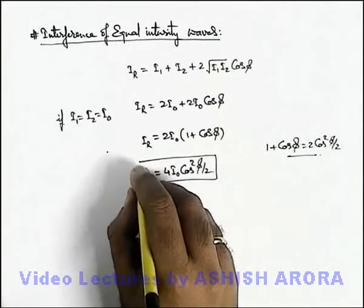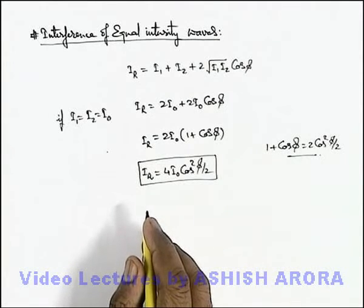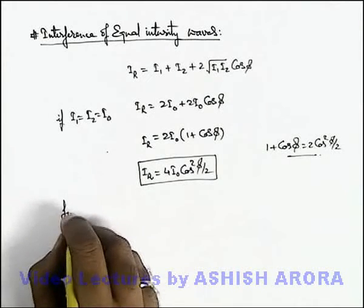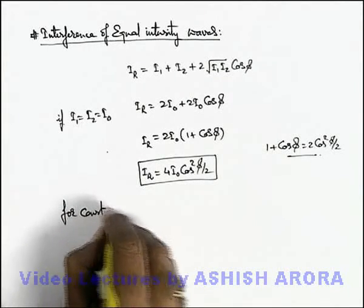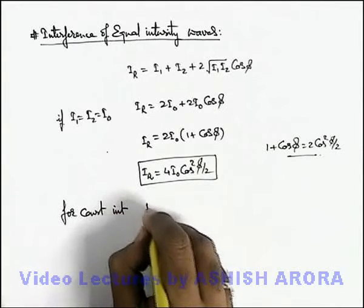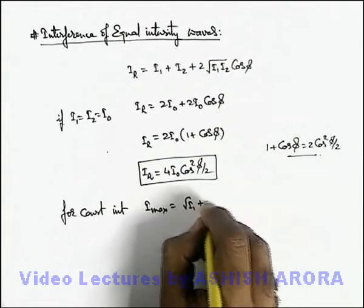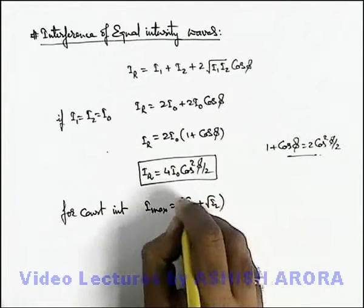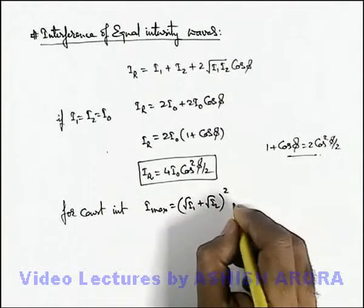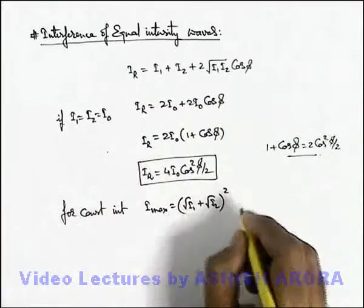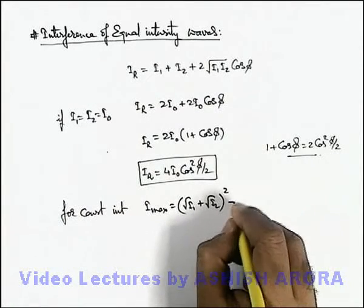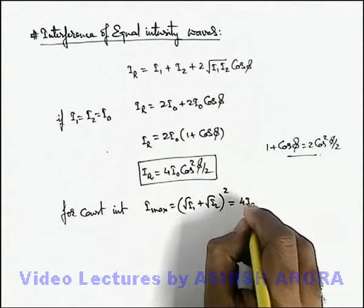Similar relation we have already studied in this section of waves. And here we can write for constructive interference, intensity is maximum which is (√I₁ + √I₂)². We have just studied in the previous section. If I₁ is equal to I₂ is equal to I₀, this will be 4I₀, that is the maximum intensity.